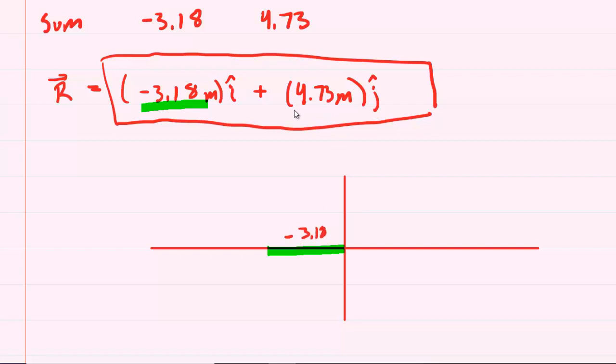And then the Y component we can see is positive 4.73. So because it's positive, you're going to go straight up the Y axis. Now, notice you're going to be doing this from the point that you left off on. So don't do it from the origin, but do it from the tip of this vector right here. So we're going to go straight up like this. You can put little arrowheads on these vectors. And again, this is 4.73.